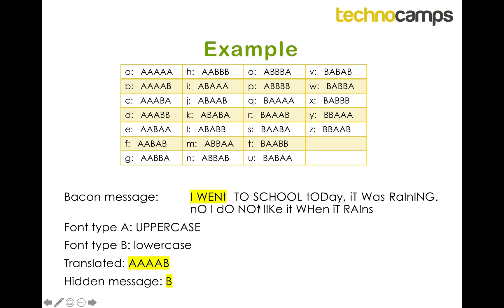We then look at the next five letter chunk, so we get capital T, capital O, capital S, capital C, capital H, so they're all capital letters, so it's AAAAA, we find AAAAA in the grid, and we see that it corresponds to the letter A, so we write that down, that was the second hidden letter, and we continue in this manner.